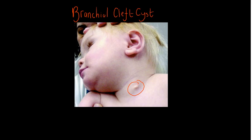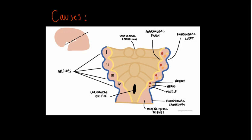The causes for branchial cleft cysts are what we're going to cover next. They usually form because of failure of the pharyngeal clefts to involute, so cast your minds back to embryology. We'll try to understand why they form in basic embryological terms.